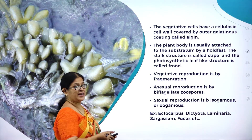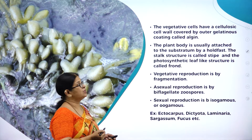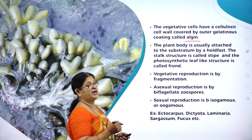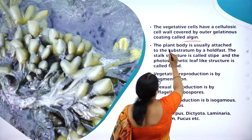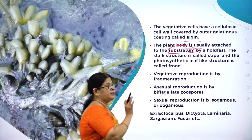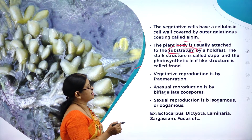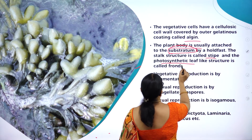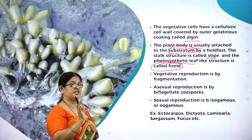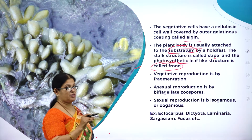The vegetative cells have a cellulosic cell wall covered by an outer gelatinous coating called algene. The plant body is usually attached to the substratum by a holdfast. The stalk-like structure is called stipe, and the photosynthetic leaf-like structure is called frond.